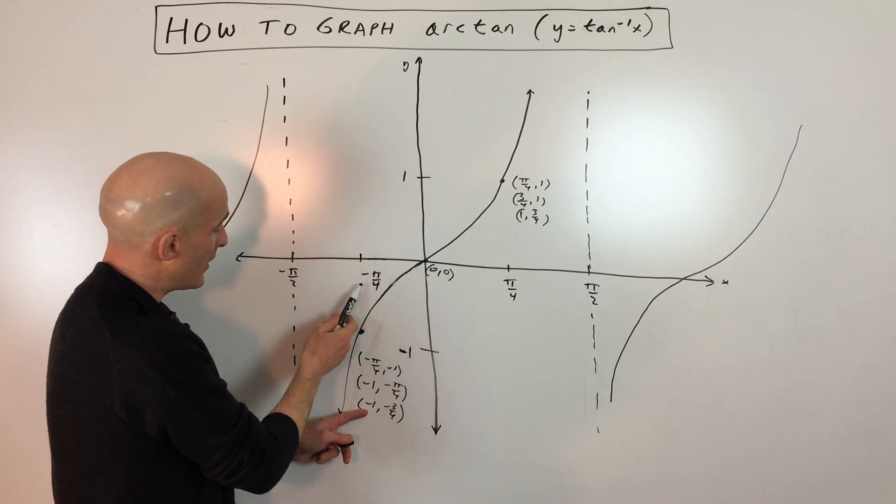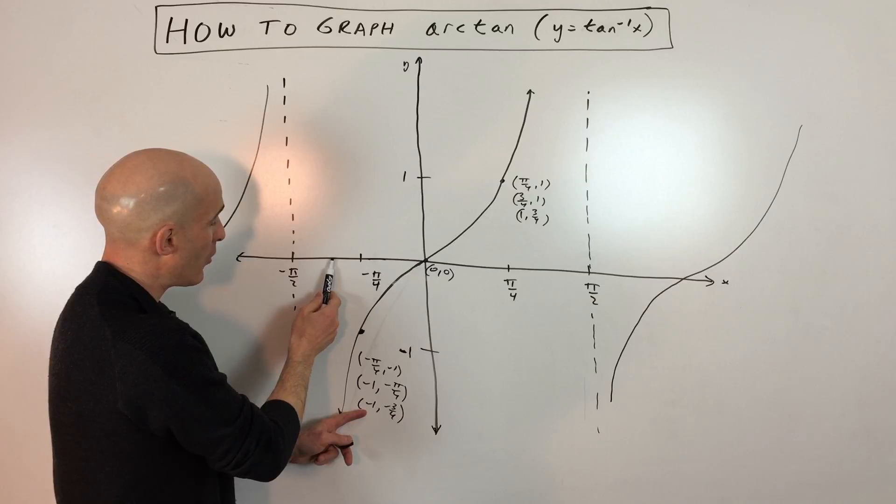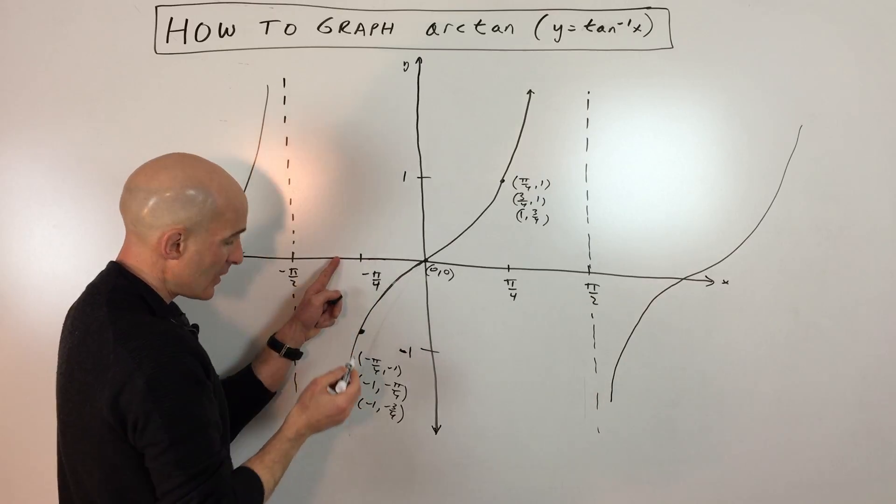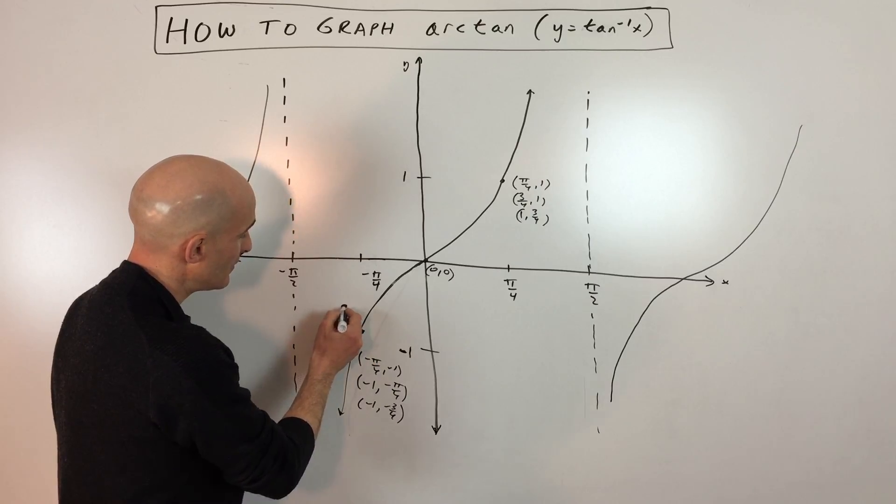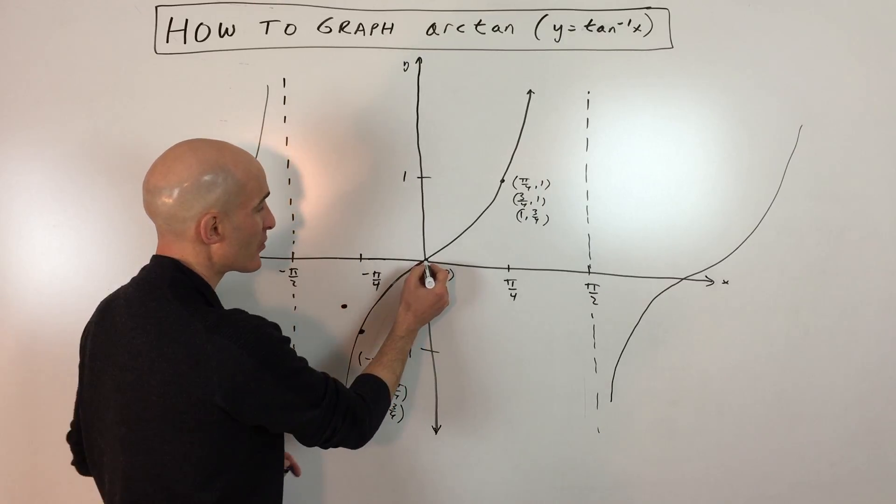So where is negative 1? Well, negative 1 would be right about here. And then negative 3 fourths is going to be right about here. So I'm just going to put that point there. 0, 0 is going to be right where it is right now.